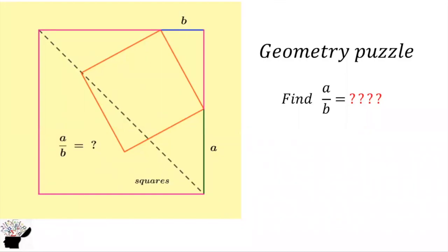Welcome you all to my YouTube channel. So let us consider this geometry puzzle. We have a square, two squares, one is a bigger square and the second one is an inclined square.